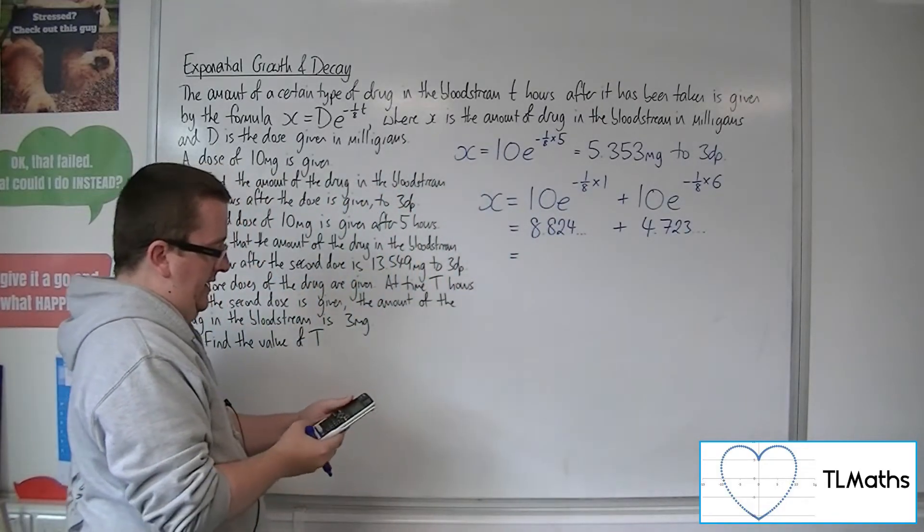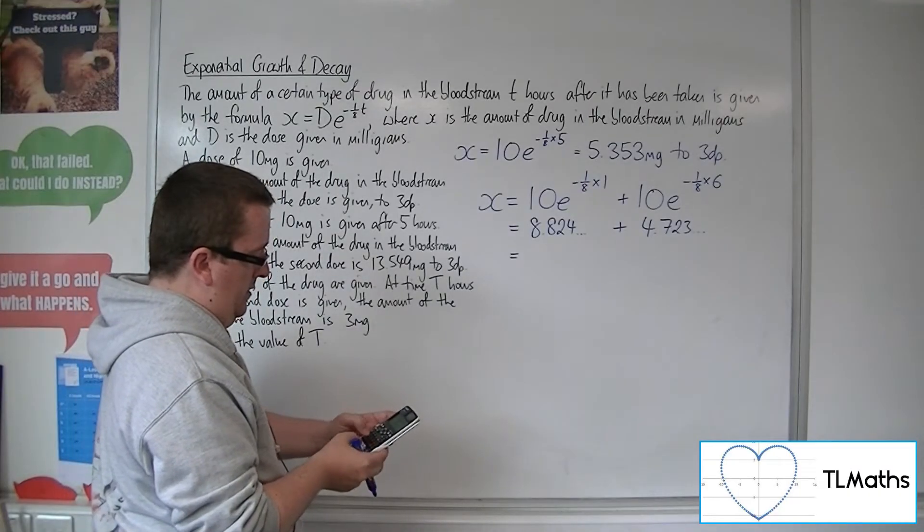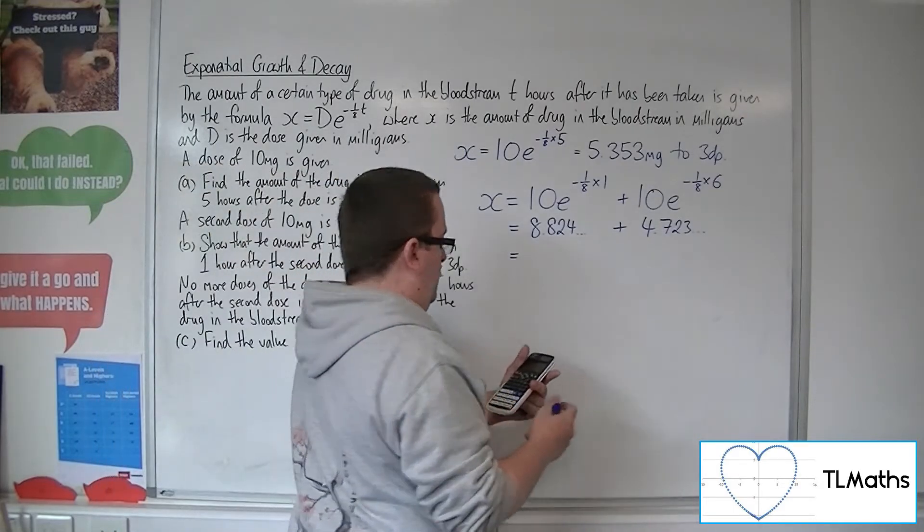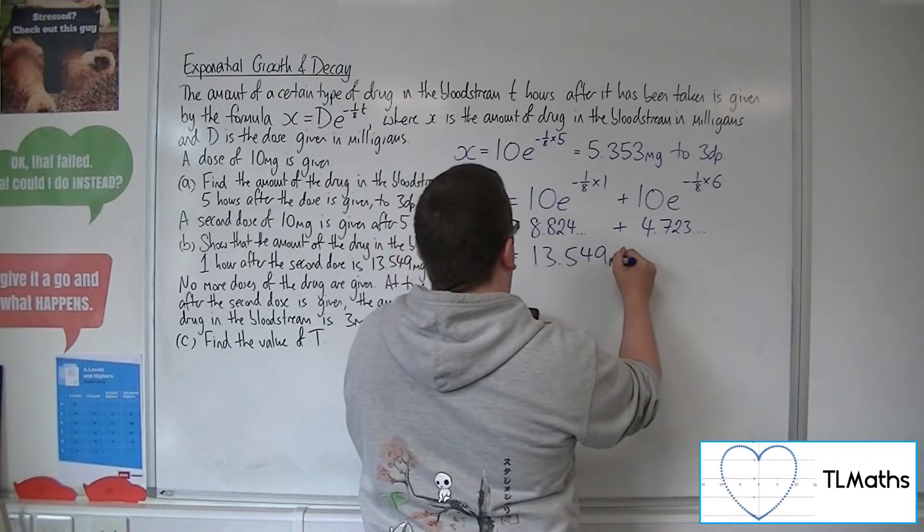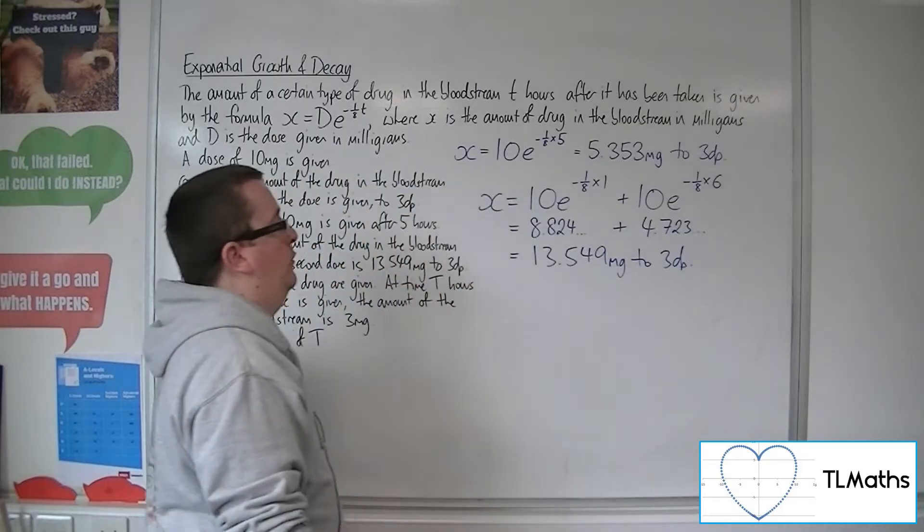Okay, now if we add these two together, we get the 13.549 milligrams to three decimal places as required.